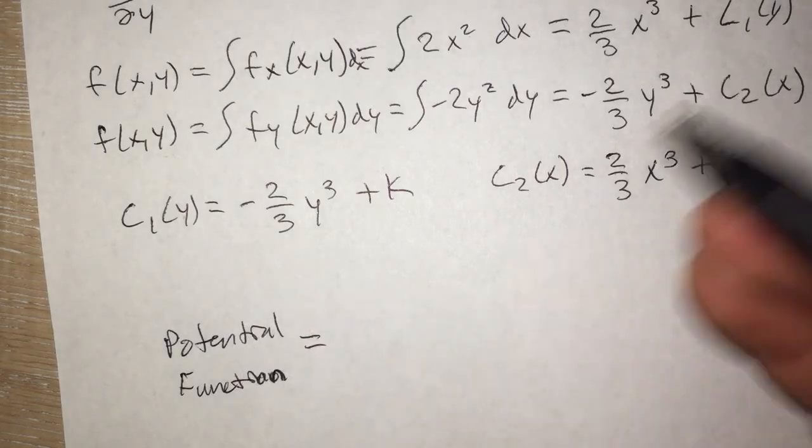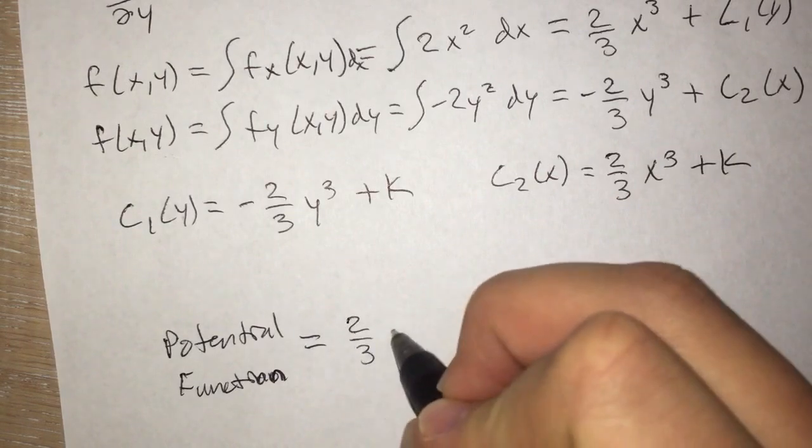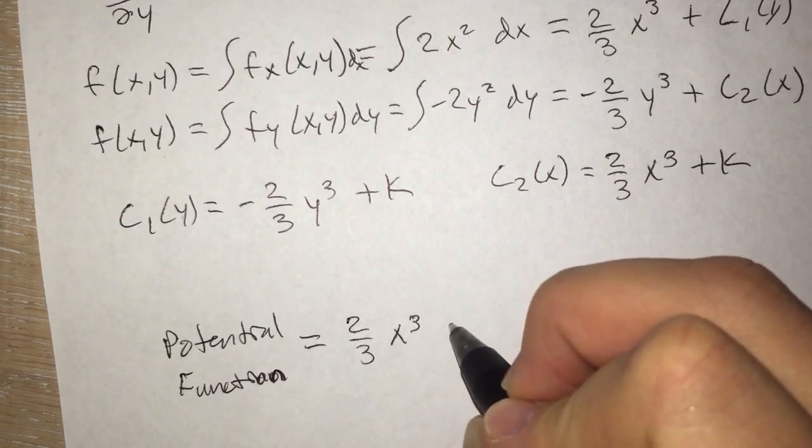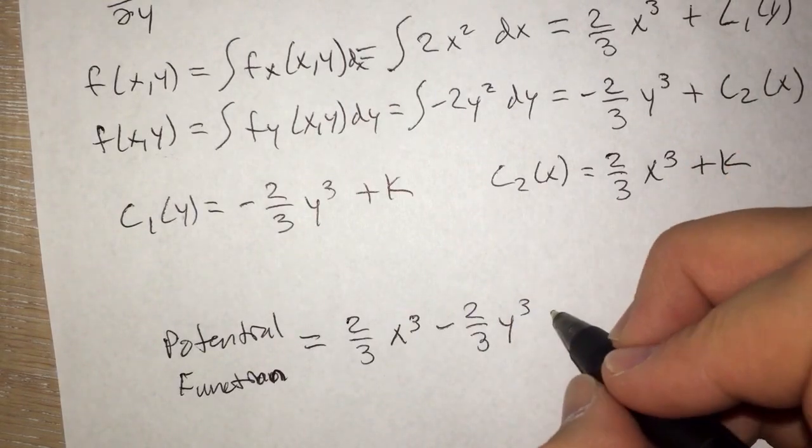So we can just start with either one. In this case I'll start with the c₂ with the positive. So I'll do (2/3)x³ and then minus (2/3)y³. And then to finish it off.